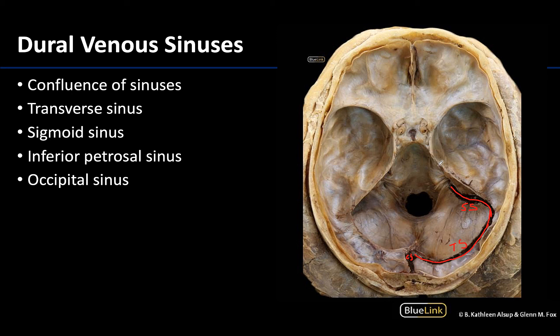Not as visible on this image, you will have what's referred to as the inferior petrosal sinus. We saw the superior up here on the superior portions; the inferior will be on the inferior side of the petrous part of the temporal bone. It is this inferior petrosal sinus that will meet and drain into the sigmoid sinus, and once you get that confluence of those two, you will have the formation of the internal jugular vein at the jugular foramen.